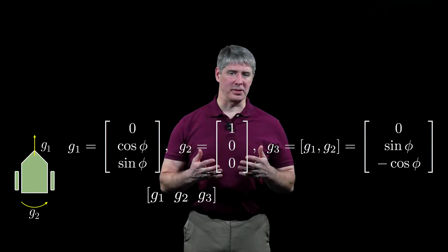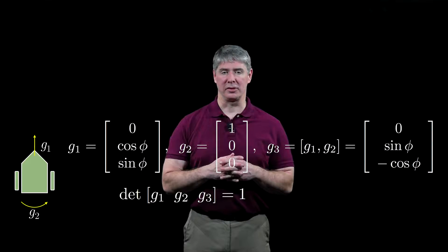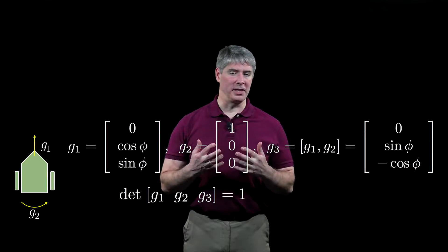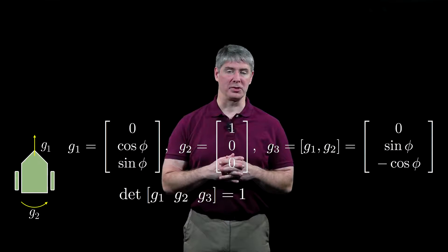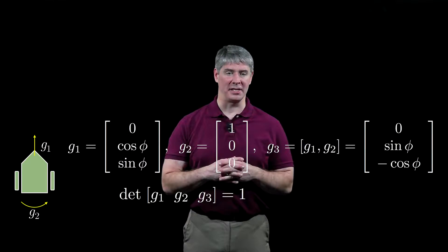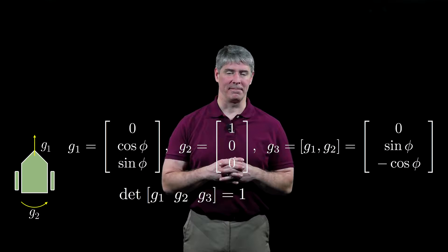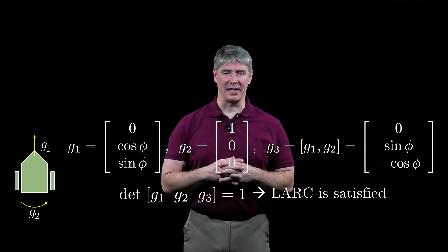If we create a matrix whose columns are the three vector fields, we find that the determinant is one. Since the determinant is non-zero, these three vector fields are linearly independent, and therefore they span the three-dimensional space of velocities of the chassis. Therefore, the LARC is satisfied at all configurations.